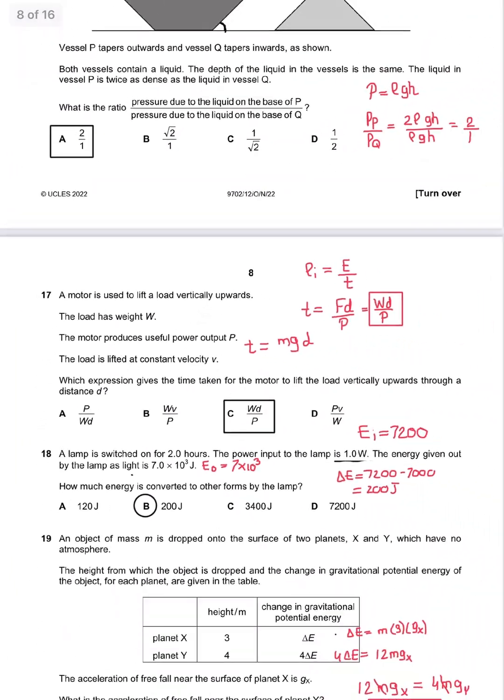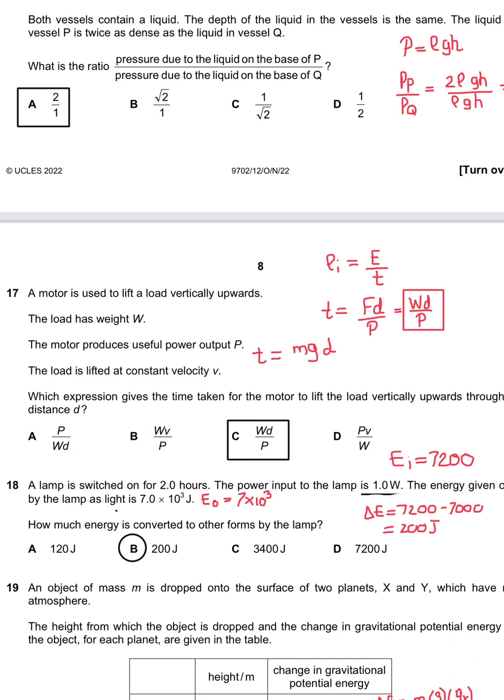Question 17: A motor is used to lift a load vertically upwards. The load has weight w. The motor produces output power P. The load is lifted at constant velocity. Which expression gives the time taken for the motor to lift the load vertically upwards through the distance? Power is energy over time, and energy is fd, so fd is weight times distance over P, over time. Making t the subject makes it wd over P. So C is the appropriate answer.